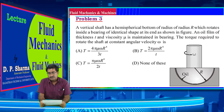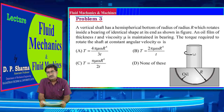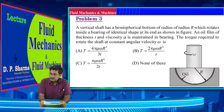Problem 3: A vertical shaft has a hemispherical bottom of radius R which rotates inside a bearing of identical shape at its end as shown in the figure. An oil film of thickness t and viscosity mu is maintained in the bearing. Determine the torque required to rotate the shaft at constant angular velocity omega.